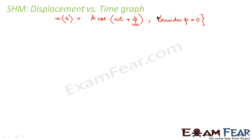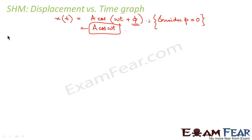Why am I considering φ = 0? That will become clear to you when I explain what phase constant is. So here I am considering x = A cos(ωt). This is my displacement expression, and with the help of this, let us calculate the values of displacement at various instances.